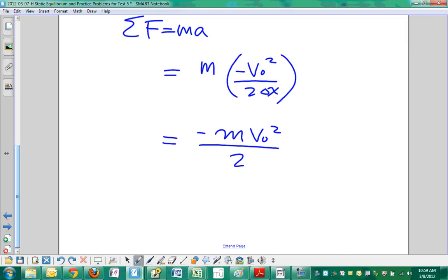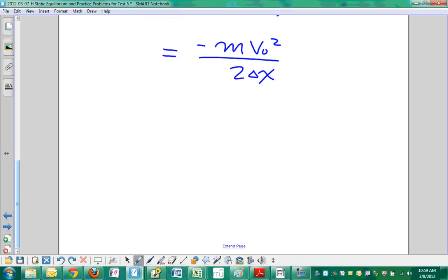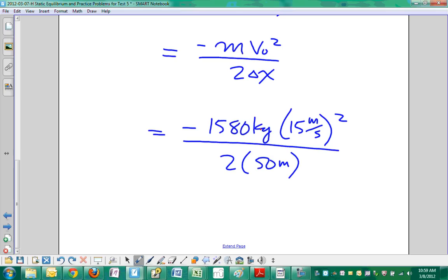Plugging in our numbers: negative 1580 kilograms times (15 meters per second)² divided by 2 times 50 meters. For dimensional analysis: kilograms times meters² per second² divided by meters gives kilogram-meters per second², which is newtons. We're looking for a force, so we're in good shape.